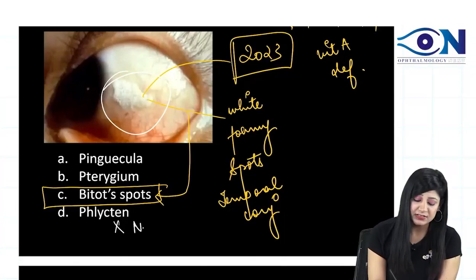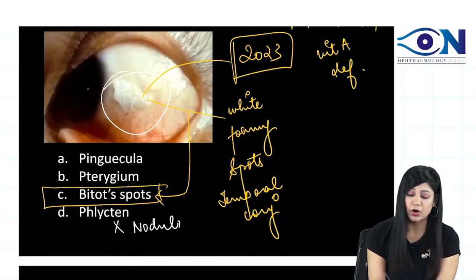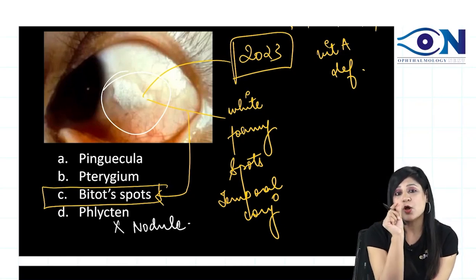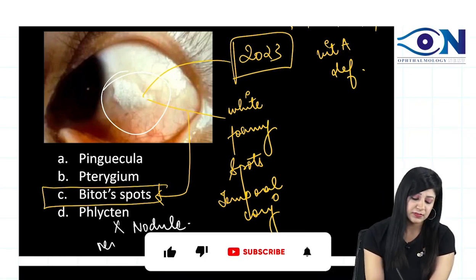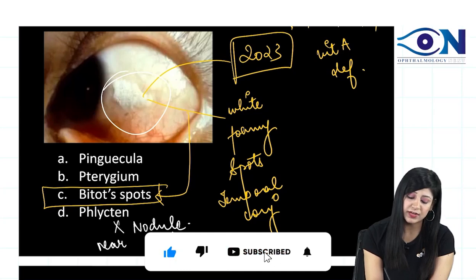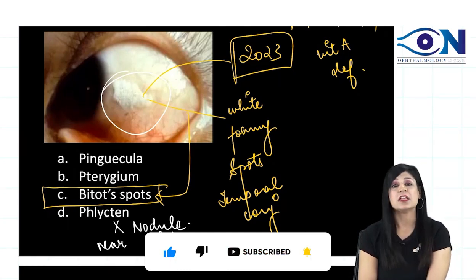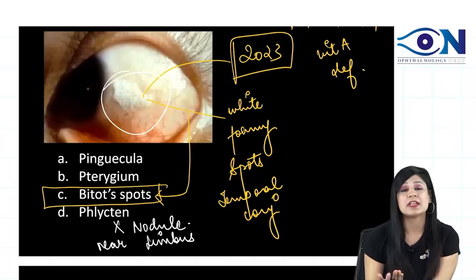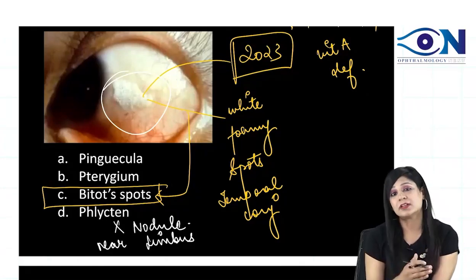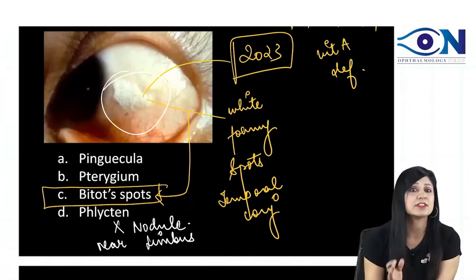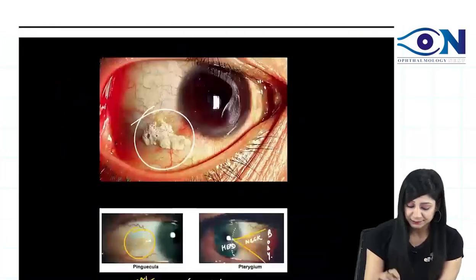Phlycten is not there — that is a nodule, so it is nodular keratoconjunctivitis. We get a small nodule near the limbus, and we will also get conjunctivitis features. Most commonly we have staph protein, followed by tubercular protein. So that is also not the answer here. This is the Bitot spots — that's right.